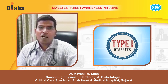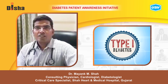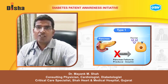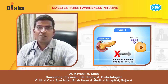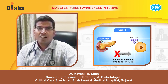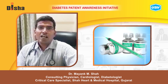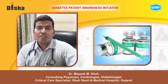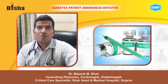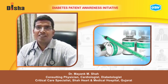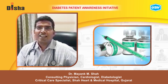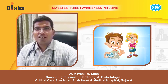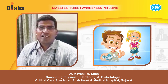Type 1 diabetes is usually developed when the body stops producing insulin, or there is a complete deficiency of insulin. Type 1 diabetes patients will require regular insulin — they should not stop insulin at any stage of life. Generally, type 1 diabetes is seen in children and young adults.